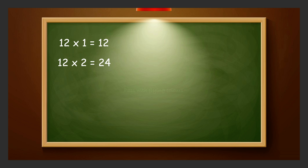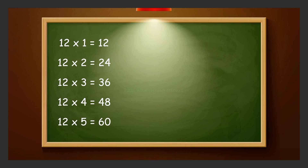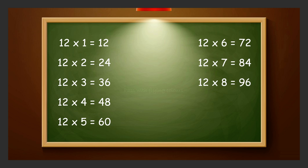12 times 1 is 12. 12 times 2 is 24. 12 times 3 is 36. 12 times 4 is 48. 12 times 5 is 60. 12 times 6 is 72. 12 times 7 is 84. 12 times 8 is 96. 12 nines are 108. 12 tens are 120.